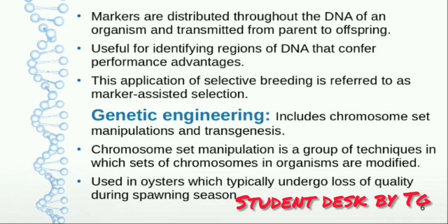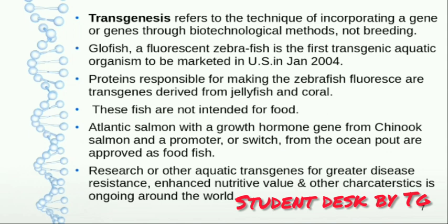Chromosome set manipulation is a group of techniques in which we modify the chromosome set of an organism. For example, in oysters, quality is lost during the spawning or reproductive season. Chromosome set manipulation has been used so that oysters do not lose their quality during spawning time.